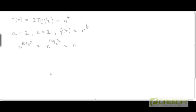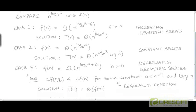Because 2 to the power 1 is 2. Now if we compare n to the power log of a base b with f, we find that f is polynomially larger than n to the power log of a base b. So we end up in Case 3 of the Master Theorem, where f is polynomially larger than n to the power log of a base b.